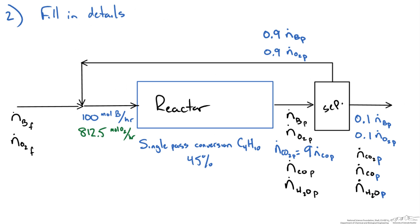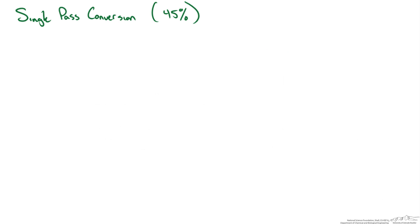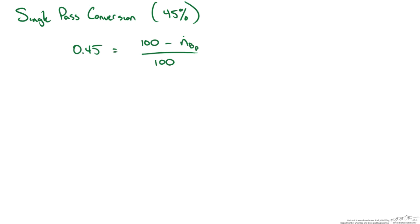The single-pass conversion tells us how much butane comes out of the reactor. The fractional conversion of 0.45 equals moles in (100) minus moles out, divided by moles in (100). Solving for the amount of butane leaving in the product stream gives us 55 moles per hour.